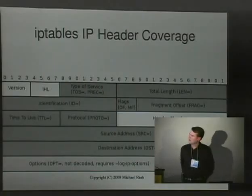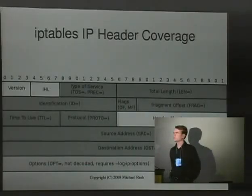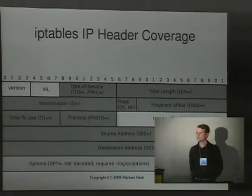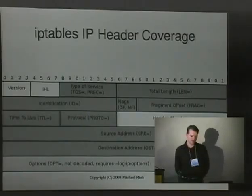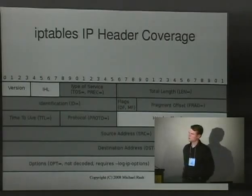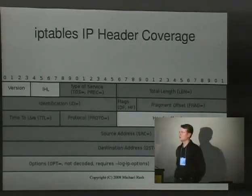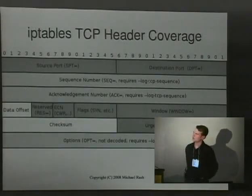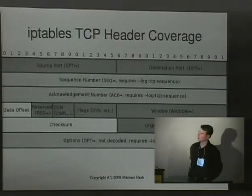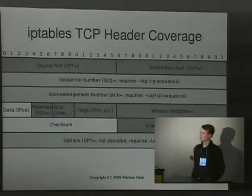Graphically, the dark gray boxes are fields logged by default by IP tables — you can't pass a command line argument that will influence how these fields are logged; you get them whether you like it or not. The gray field at the bottom is the IP options field, also logged but only if you use the '--log-ip-options' command line argument when building your logging rule. For the TCP header, you get source and destination ports, TCP window size, and a few other things by default, but you can also log sequence and acknowledgement numbers, as well as the options portion of the TCP header.